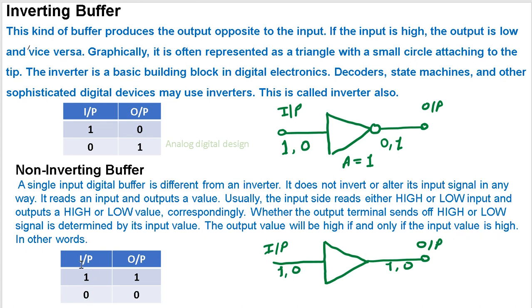In other words, input is 1, output will be 1. Input is 0, output will be 0. Same thing is here. This is the non-inverting buffer symbol.